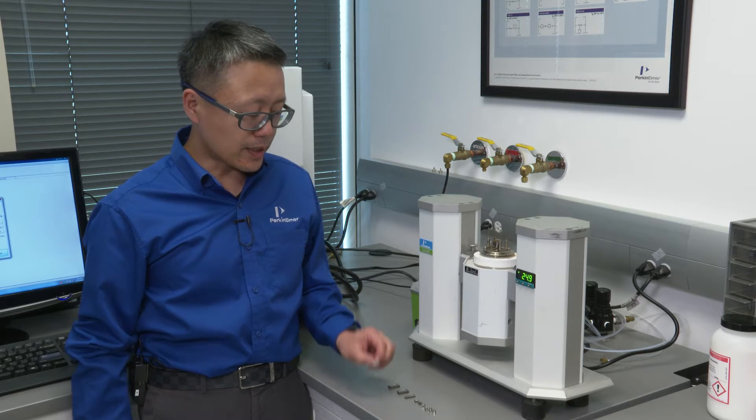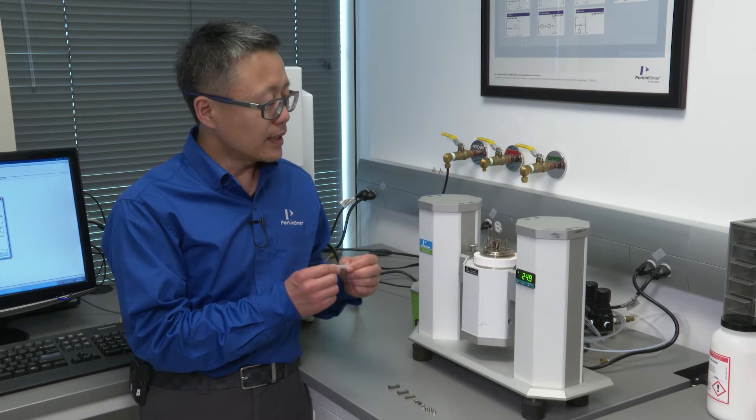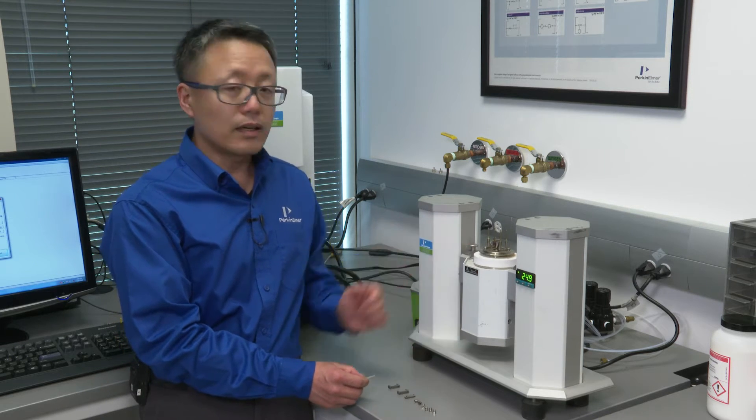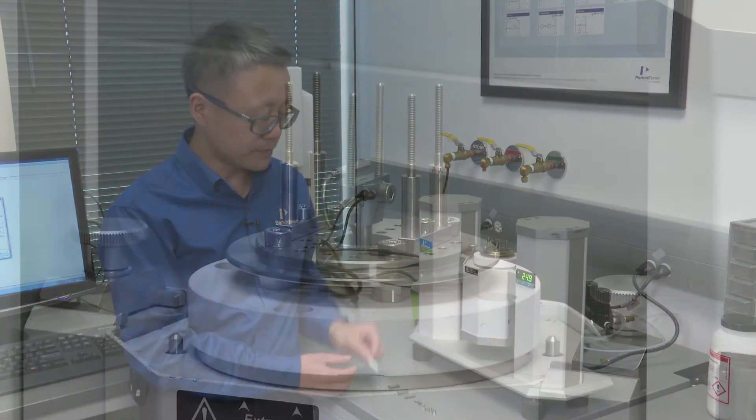This is an example for three-point bending. We usually make it into rectangular bars. I'm going to show you how to put these parts on the DMA8000 and run the material like this.